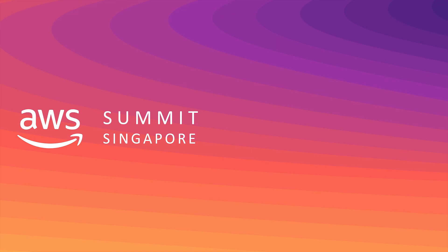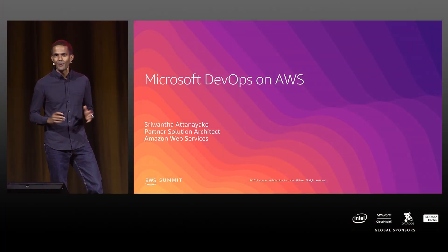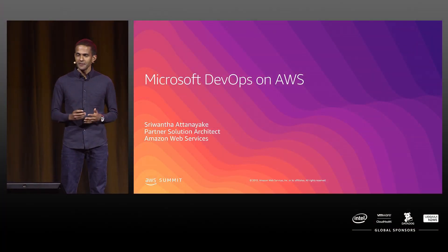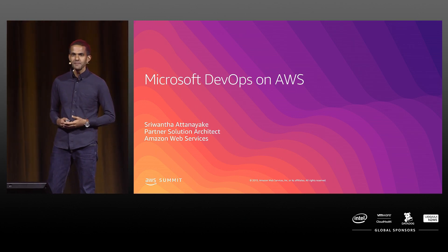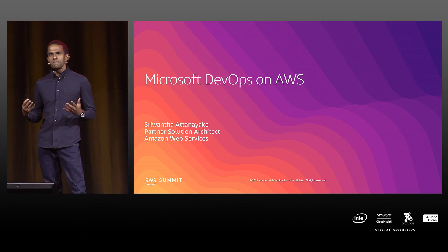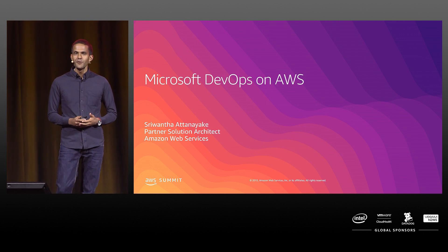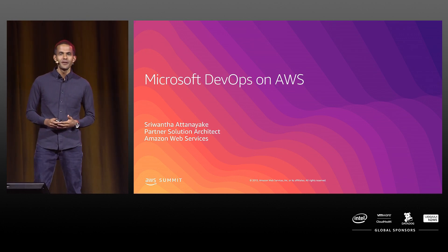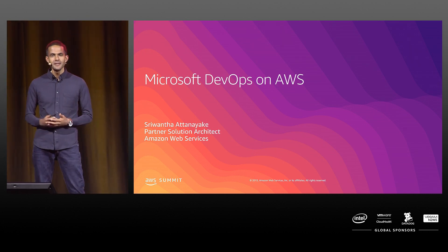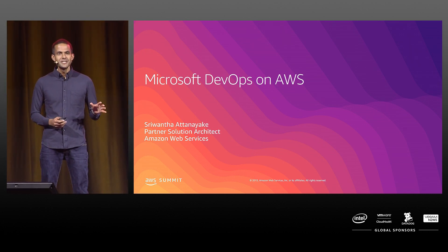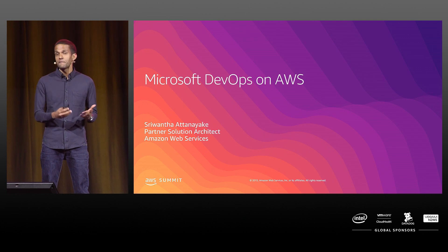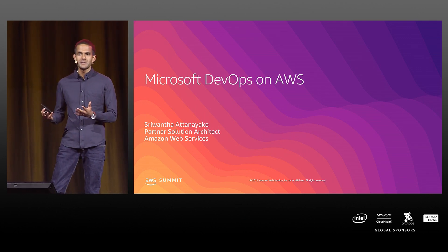This is going to be the last session on the application modernization stack. My name is Srivan Tathunayake. As a partner solution architect focusing around Microsoft technologies at Amazon, my daily job is to help a lot of our customers to run Microsoft workloads great on AWS.